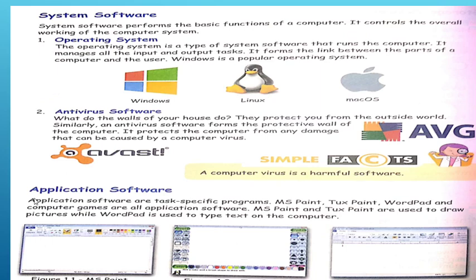We use application software for the work we do on the computer. For example, we work on MS Paint — it looks like the familiar screen of MS Paint. TuxPaint is used in junior classes. WordPad is where you can type things like your name, class, school, and home address. These particular tasks — like painting and typing documents — can be done with these software programs.